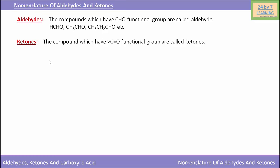Now we will see what are ketones. The compounds which have functional group C double bond O are called ketones. This is the way ketones can be written: R-C(=O)-R. Here is an example of a ketone: CH3COCH3, which is a ketone because the keto group C double bond O is present.